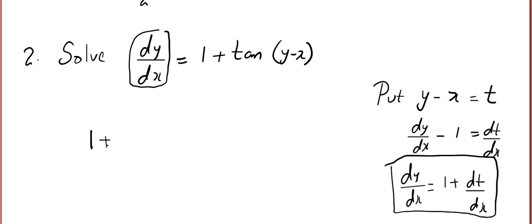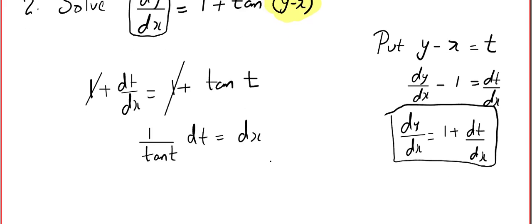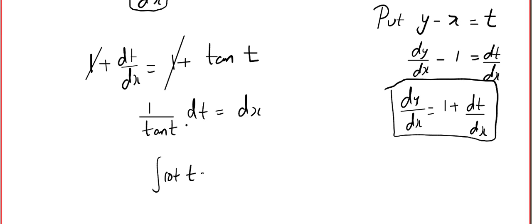So dy/dx = 1 + tan t. What is our y - x? That is t. 1 + dt/dx = 1 + tan t. By the way, what is 1 + tan t? That simplifies. Time to integrate.